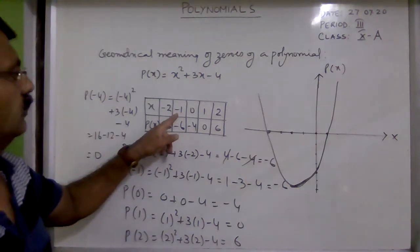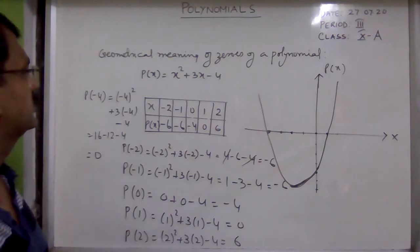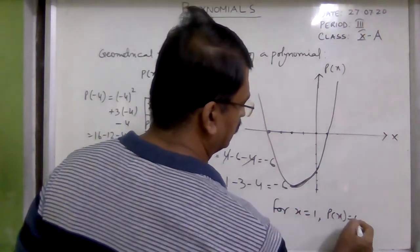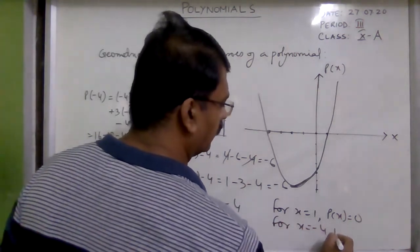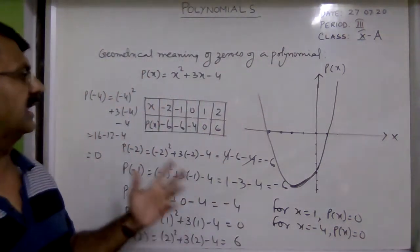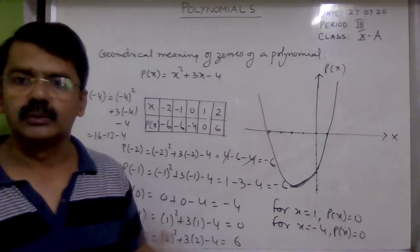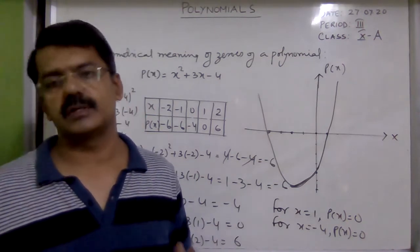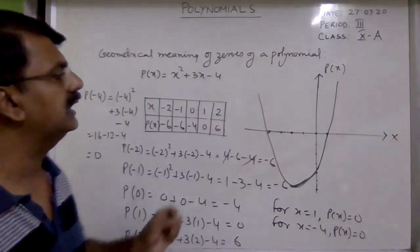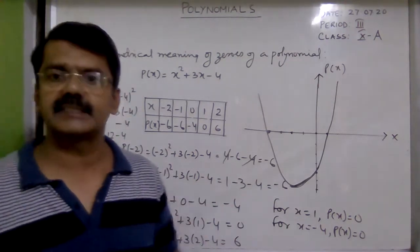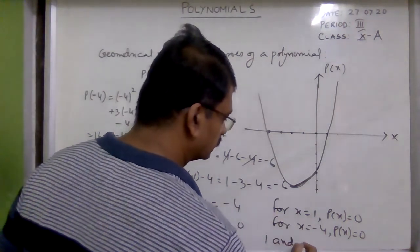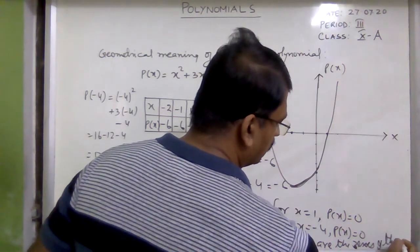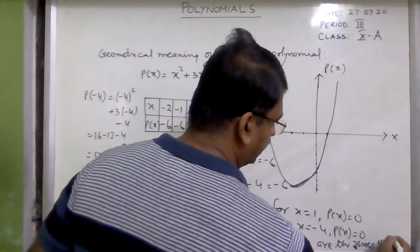The curve intersects the x-axis at two points, meaning for two values of x the p(x) will be 0. Those values are x = 1 and x = −4: for x = 1, p(x) = 0, and for x = −4, p(x) = 0. So we have two different values of x for which p(x) is 0 — that means it has two zeros. This is the geometrical explanation of why a quadratic polynomial has two zeros: because when we draw the graph, it intersects the x-axis at two points. So 1 and −4 are the zeros of p(x).